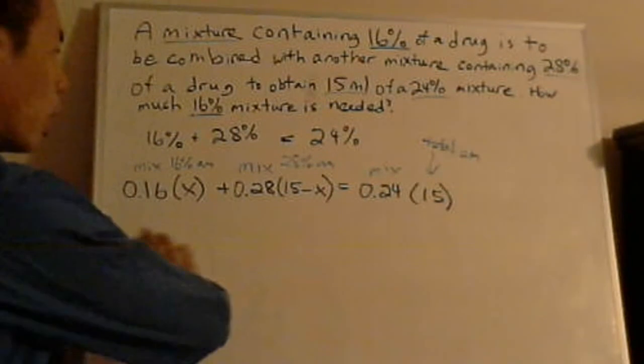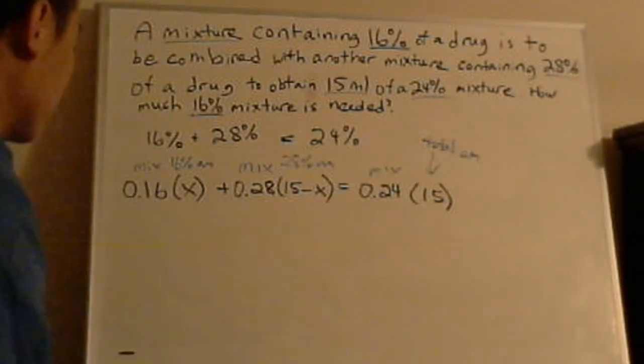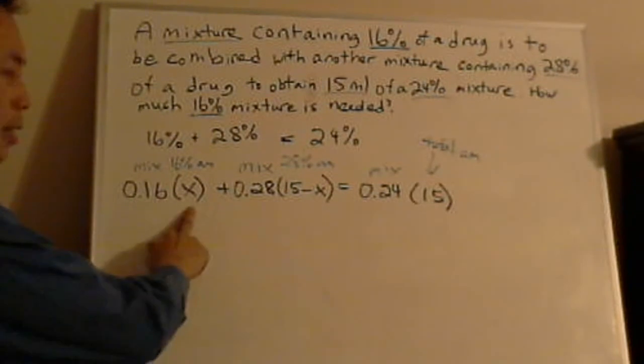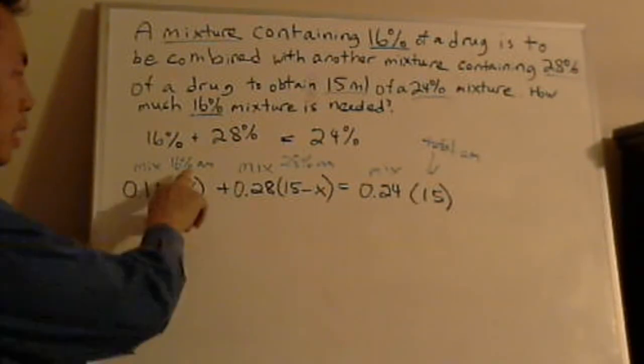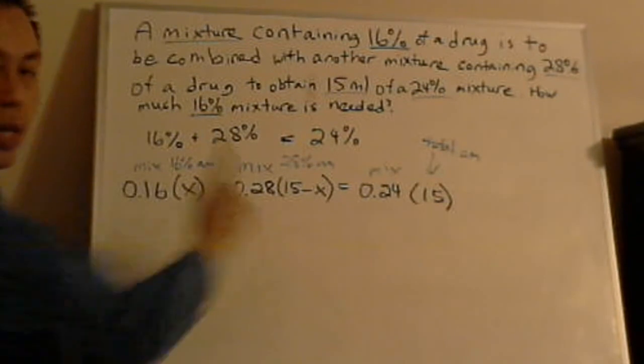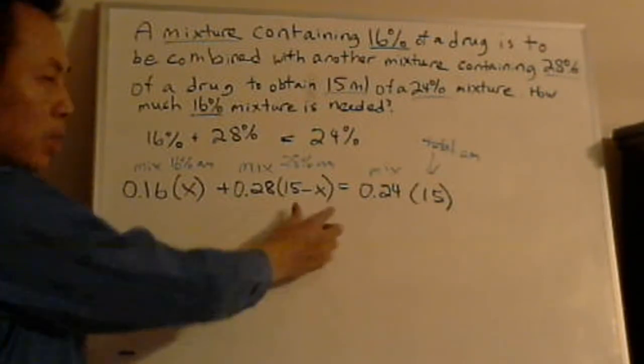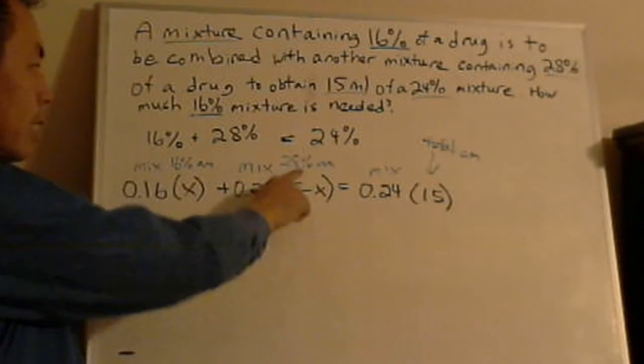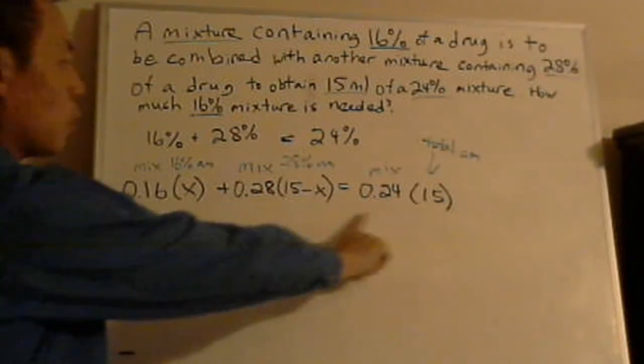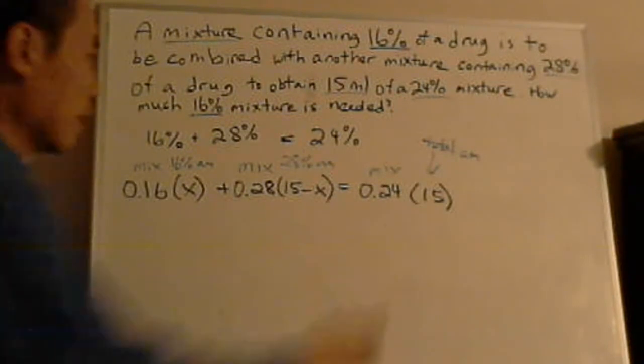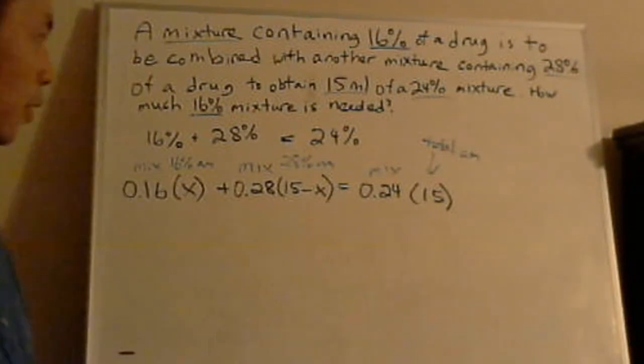So if you look at the equation right now, it should be very clear how it works. So you have 16% of some mix. And x represents how much of the 60% we have. Plus the 28% mix times 15 minus x is how many of the 28% it has—the 28% amount. Equals to, if you add it all up, now you're going to get 24% as the final mix. And you know there's 15 milliliters total. So now you have the equation right now and let's solve it right now.